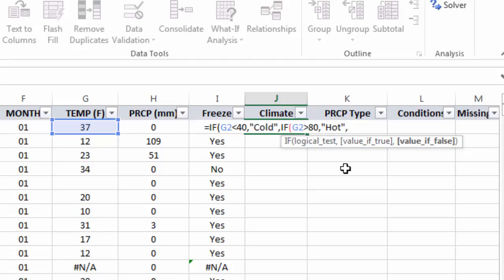And then I get to my final value of false. So if I'm done incorporating all of my tests here, and I'm ready to populate my catch-all value of false message or value, I'm just going to enter that here. So it's going to be mild.